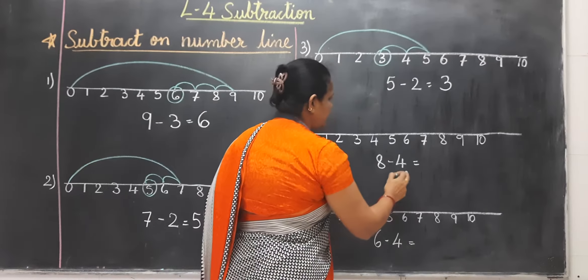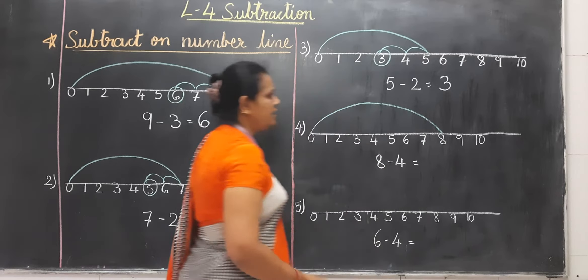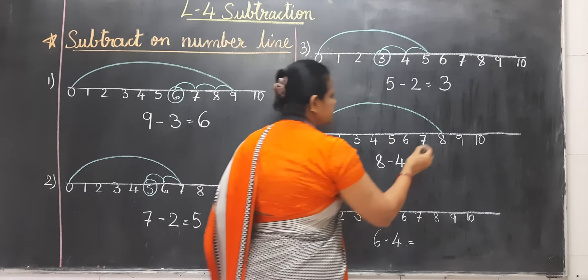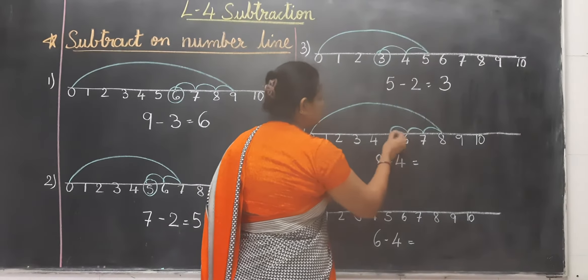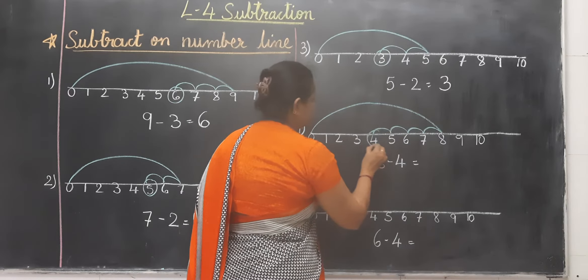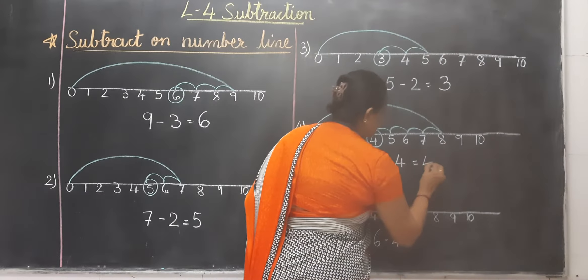Next is 8 minus 4. From 0 to 8, and we have to take a small semicircle of 4, cut 4: 1, 2, 3, and 4. Now your answer is 4.